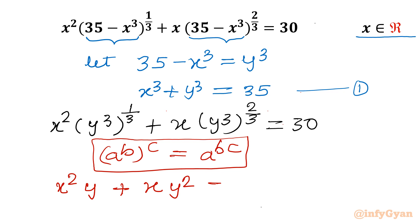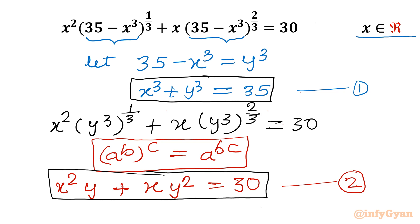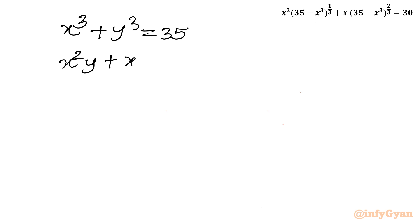So we get x squared y plus x y squared equal to 30. This is equation number 2. So we have framed two equations in our new system: equation 1 is x cubed plus y cubed equal to 35, and equation 2 is x squared y plus x y squared equal to 30.